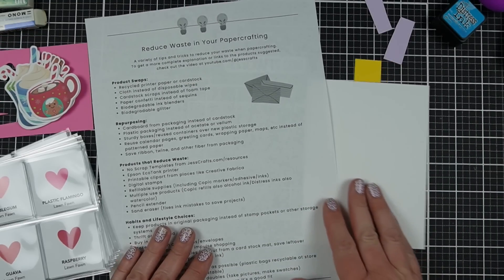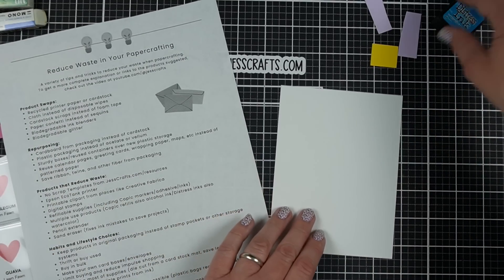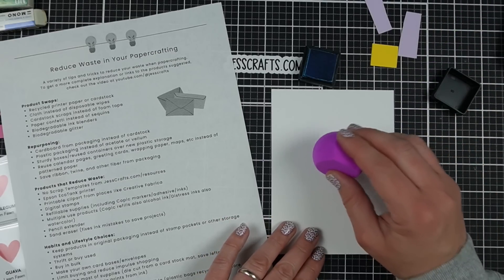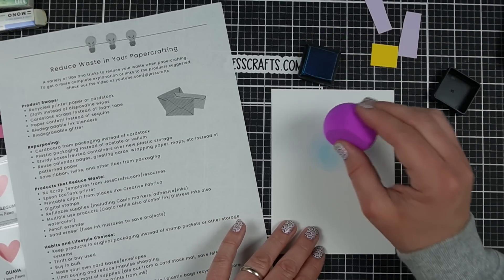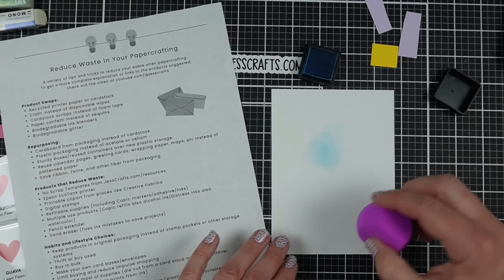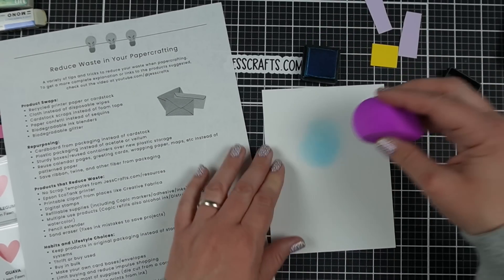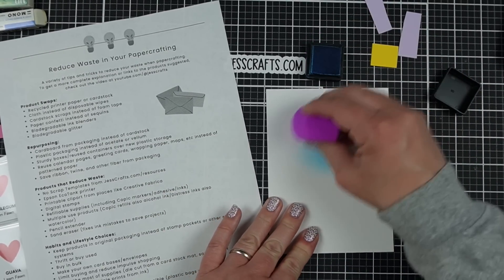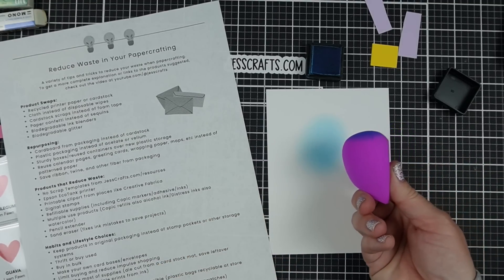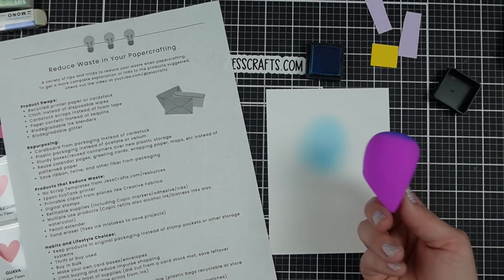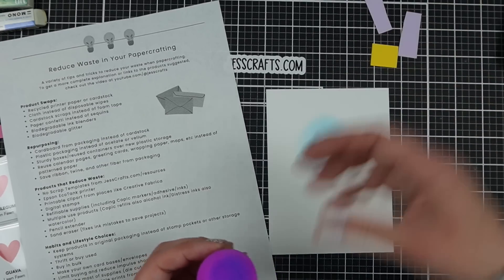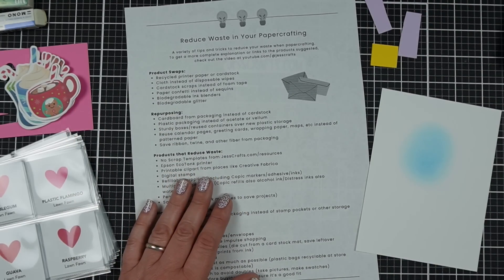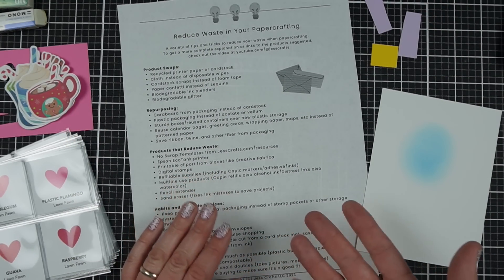Biodegradable ink blenders. Of course, if you already have ink blenders, don't go out and buy specifically biodegradable ones. Biodegradable is cool because they're supposed to be compostable. They're from EcoTools and I wanted some like sponge dabber type ones because when I do stenciling, I like to be able to dab through and my brushes don't do a very good job of that. Although I did find these ones you can also brush on and get a really soft edge. Biodegradable glitter. I don't really use a lot of glitter, but if you really like it, then they do have glitter that is made to dissolve over time.